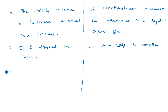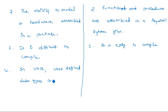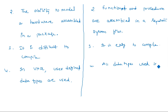The fourth point: in VHDL, user-defined data types are used. Whereas in Verilog, all data types used in the Verilog model are predefined.